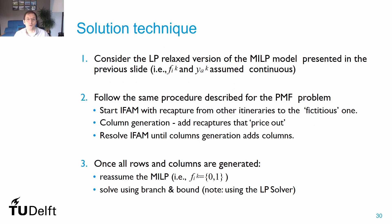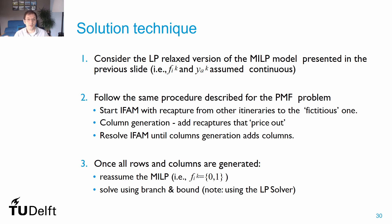How can we solve this problem? An easy but not exact approach is to use the column generation algorithm discussed for the passenger mix flow problem. But now, we first have to relax our binary and integer decision variables from our fleet assignment model — that is, we assume decision variables will be continuous — otherwise it would not be possible to obtain the dual variables needed to implement the column generation algorithm. After doing this, we can follow the same approach discussed for the passenger mix flow problem.